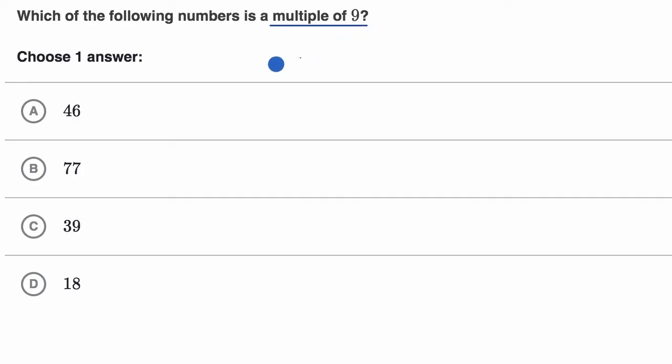So we could figure out the multiples of nine by skip counting. You could go from nine, and then you add nine to that, you get to 18, you add nine to that, you go to 27, you add nine to that, you get to 36, you add nine to that, 45.